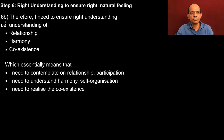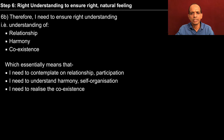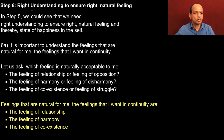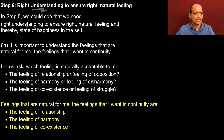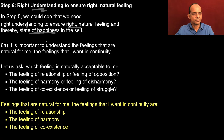In step six, we are trying to work out that there is a need for ensuring right understanding to ensure right and natural feeling. And what is to be understood, we are trying to make out. In step five we could see that we need right understanding to ensure right and natural feeling and thereby a state of happiness in the self. So we could make out the need in step five.